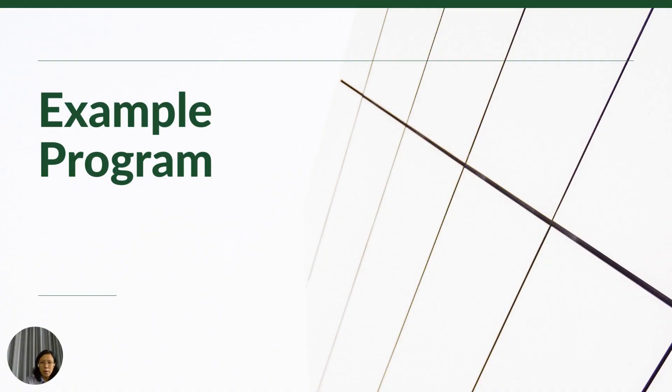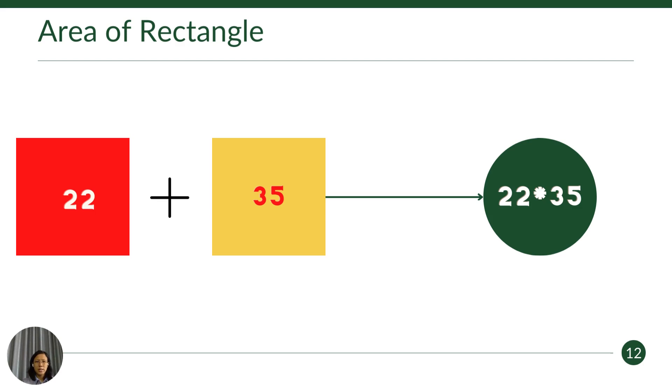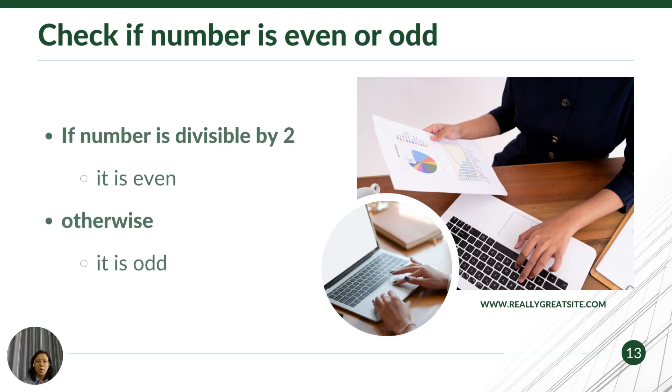Now, let's get some programming example. For example, in this exercise, I ask you to compute the area of a rectangle. So there are two variables, actually three variables. Two variables to hold width and height of the rectangle, and then to put the results of the area.